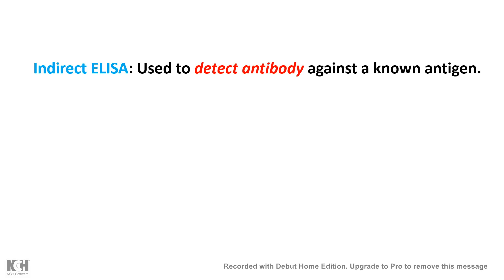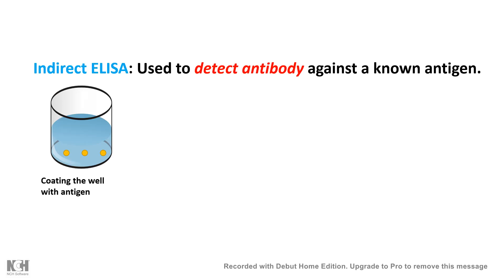Indirect ELISA is the technique widely used to detect antibodies against a known antigen. When HIV affects our body, our immune system responds by creating antibodies. So if we can detect specific antibodies against known HIV viral proteins from a patient blood sample, we can be sure the patient is infected. In this technique, microtiter plate wells are coated with the HIV antigen.